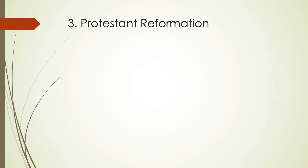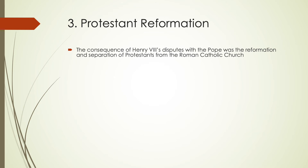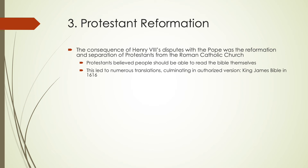The Protestant Reformation also had a big consequence during this time period. Henry VIII's disputes with the Pope — the Reformation — separated Protestants from the Roman Catholic Church. Protestants believed that people themselves should be able to read the Bible, so this is when translations of the Bible into English really started to take off. We do see some Middle English translations of some areas of the Gospel, but not to the same extent as during the early modern period. This led to a lot of translations, including an authorized version of the King James Bible in 1616.